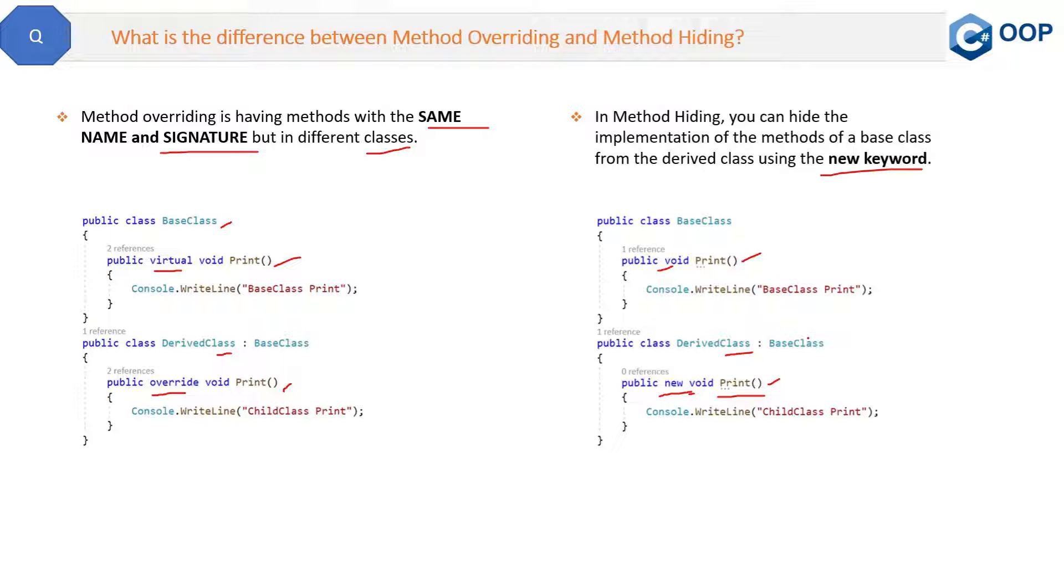I hope it's clear to you that in overriding we are just overriding the methods, but in some cases we can use the base class method also. But in method hiding, by using the new keyword we are giving a completely new definition to the derived class method, so there is no relation with the base class method. If you have any queries about this question, then please post your question in the comment section and I will try to answer that also.